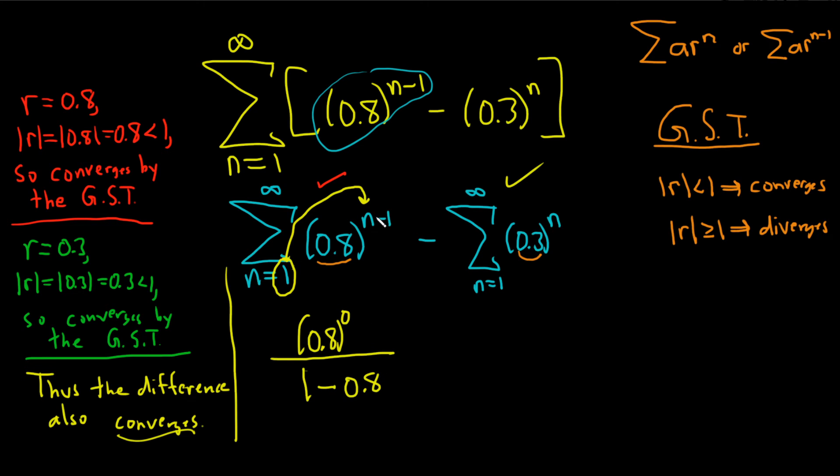Again, take this number, plug it in, write the result up top, divide by 1 minus r. Do the same thing here, take this number, plug it in, so we get parentheses 0.3 to the first power over, and then on the bottom we have 1 minus r, so this time it's 1 minus 0.3.